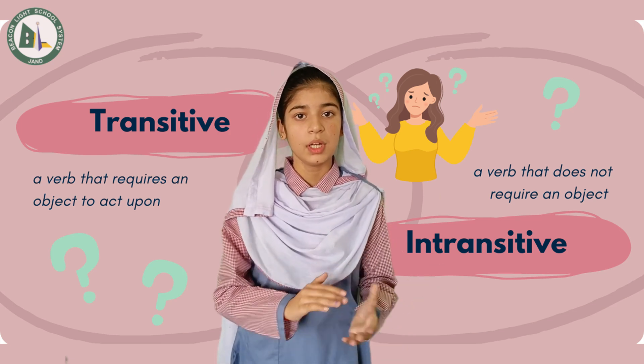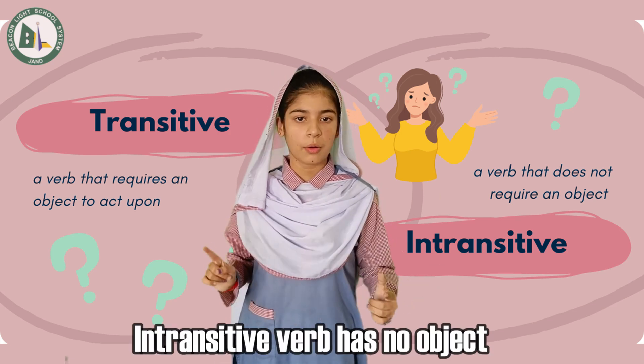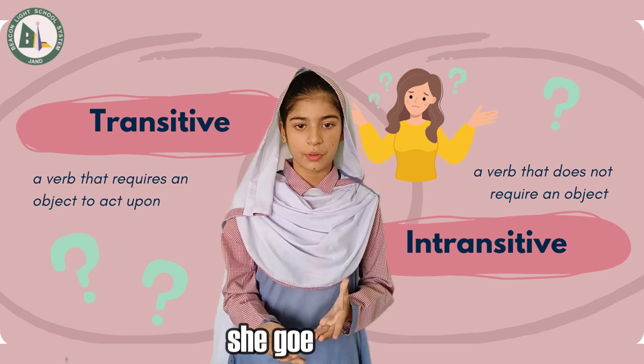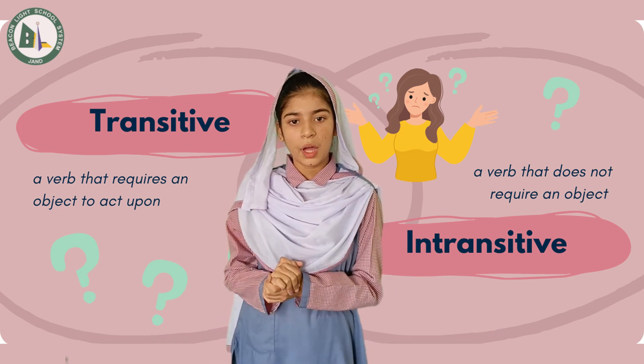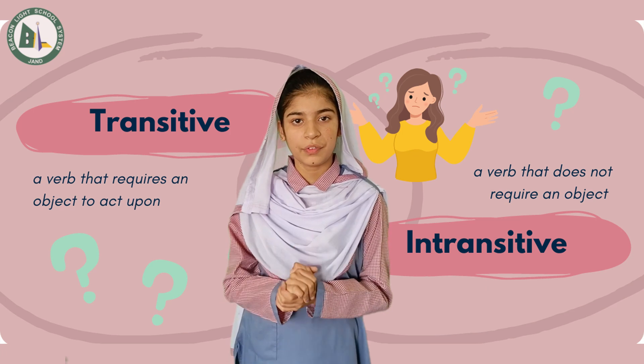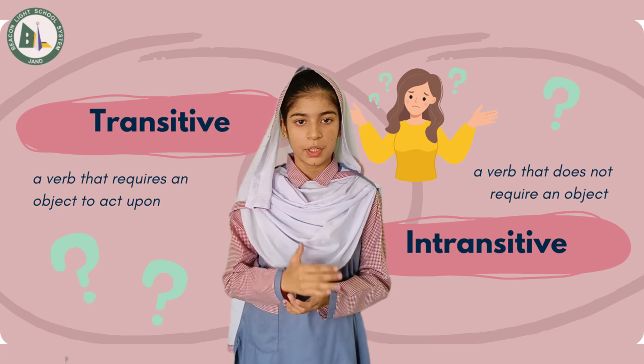Intransitive verb. An intransitive verb has no object. For example, she goes. Here, we have no idea where she goes, so this is a perfect example of an intransitive verb.